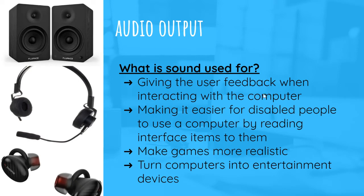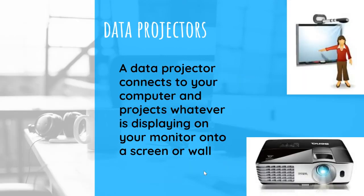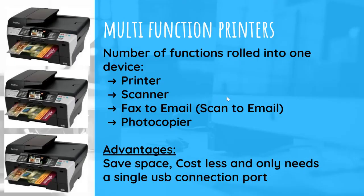Output devices — audio output: Sound gives the user feedback when interacting with the computer, such as when you make a mistake. It makes it easier for disabled people to use a computer by reading interface items to them, makes games more realistic, and turns your computer into an entertainment device. Data projector: Connects to your computer and projects whatever is displayed on your monitor onto a screen or wall.